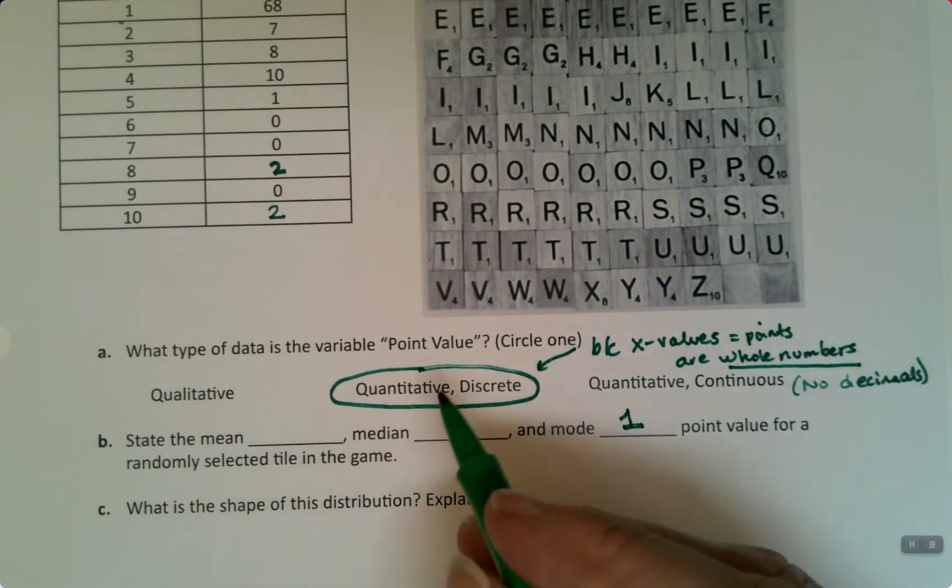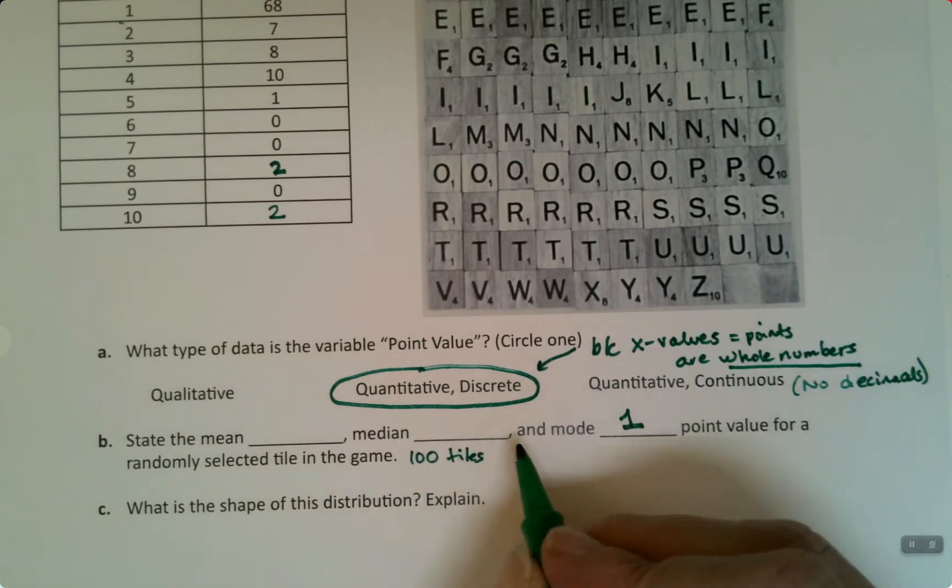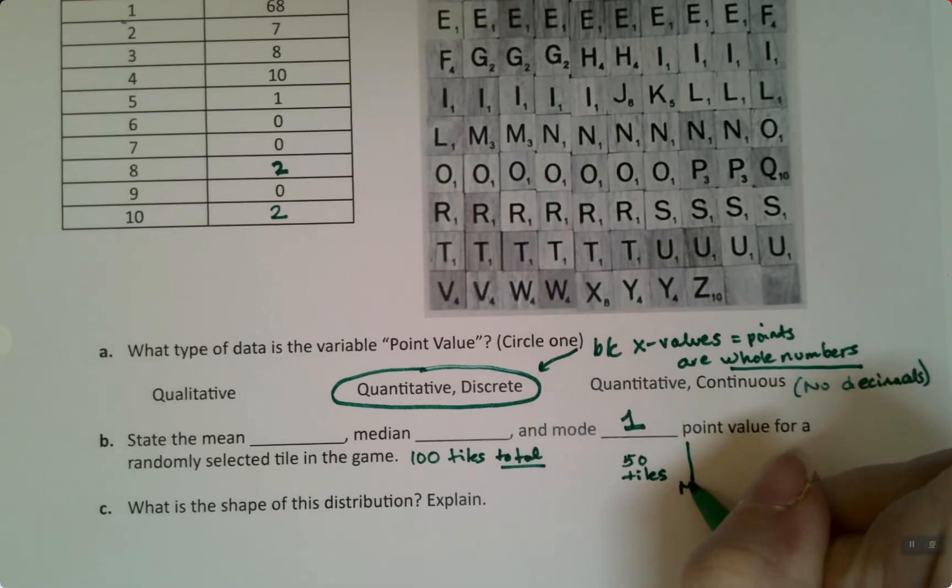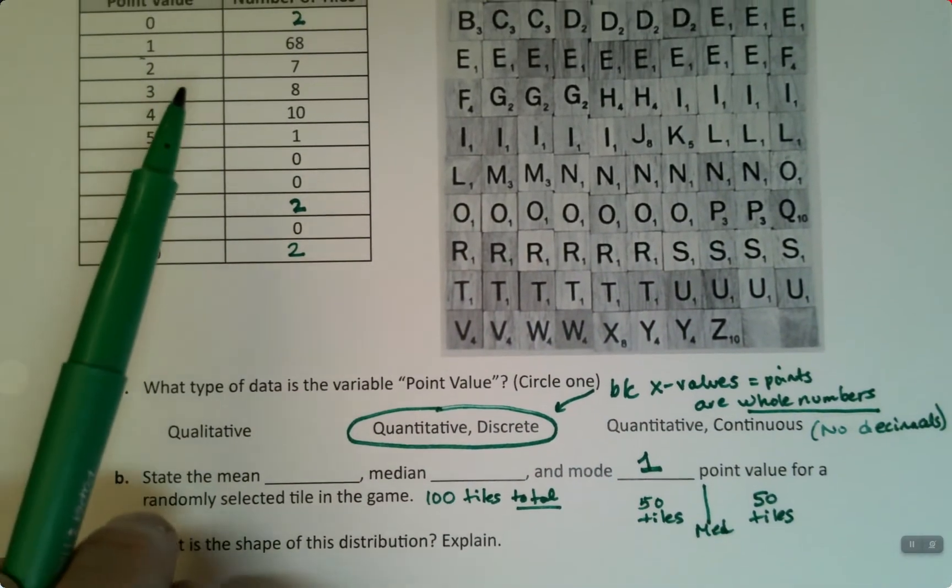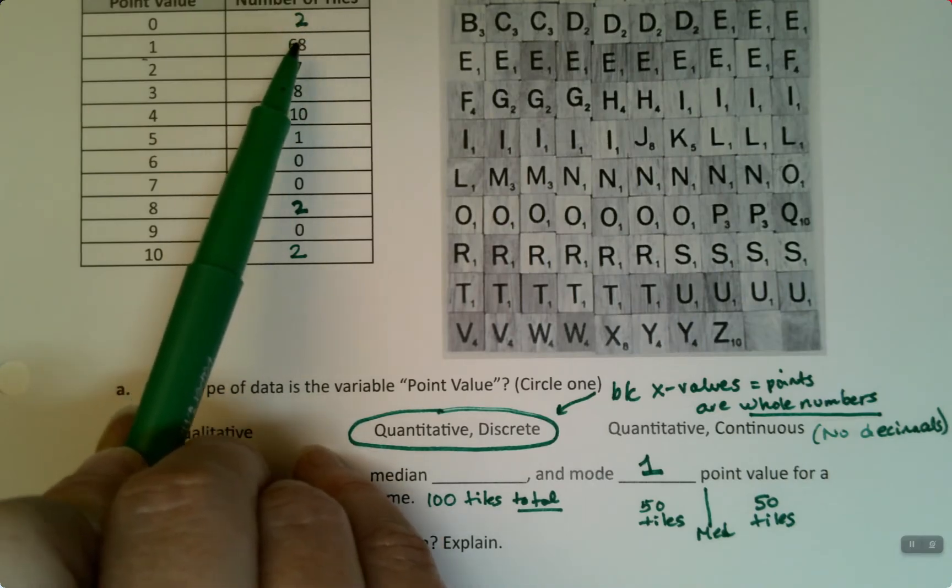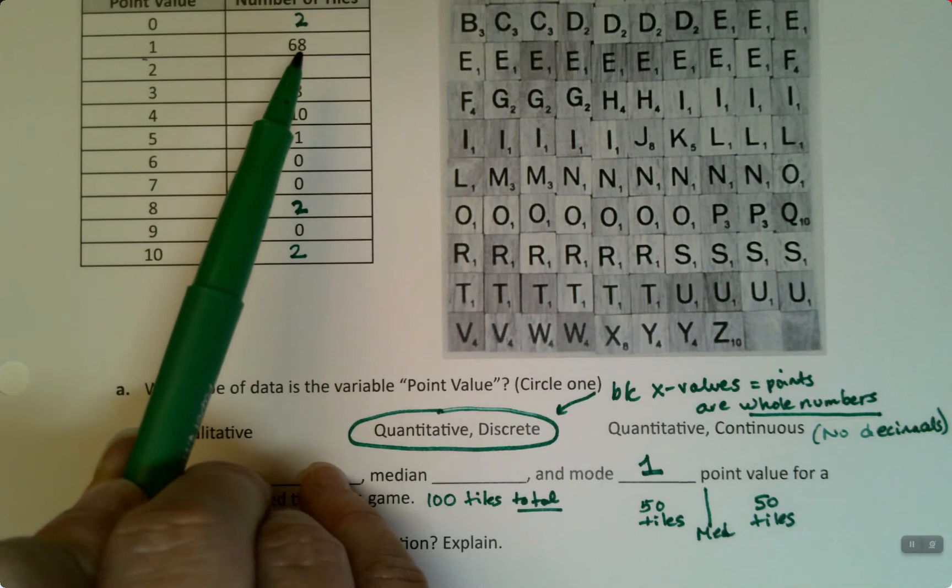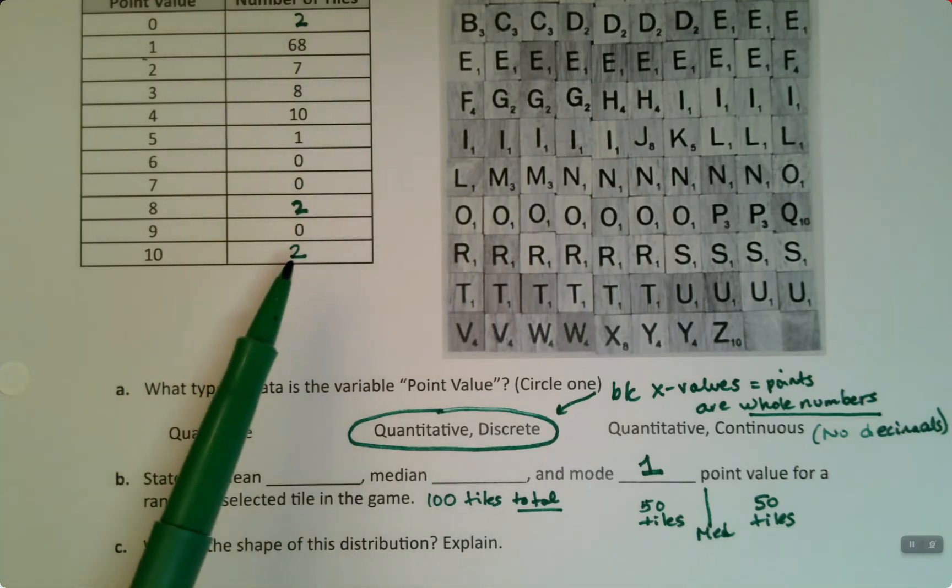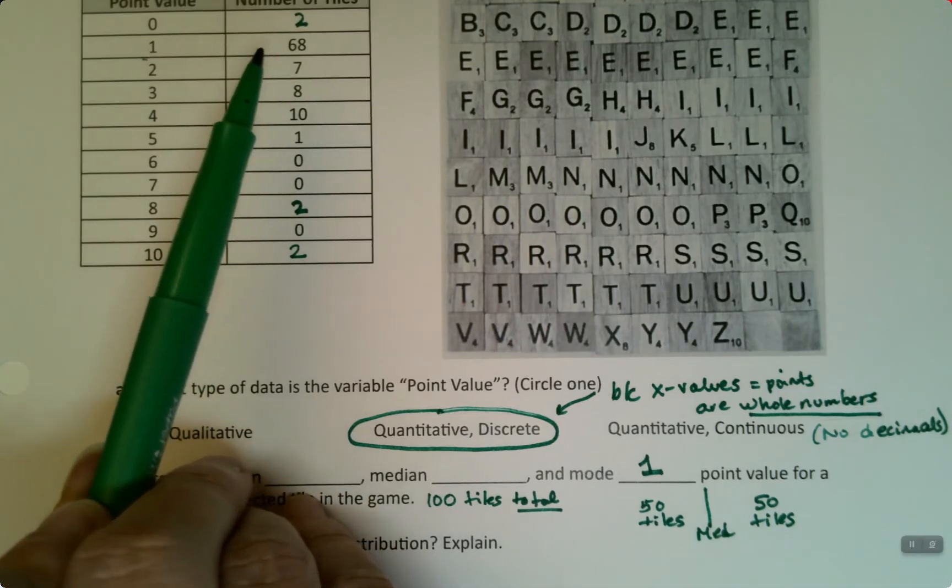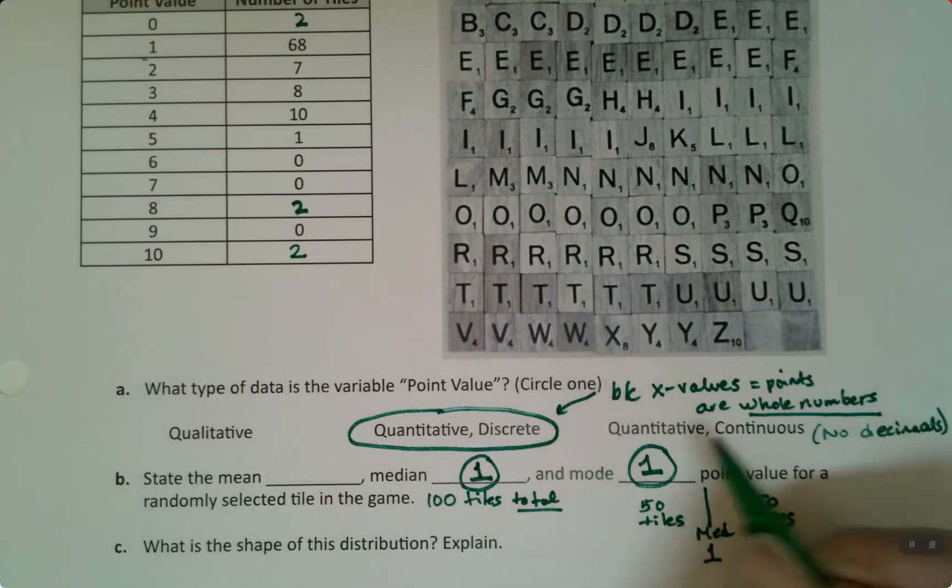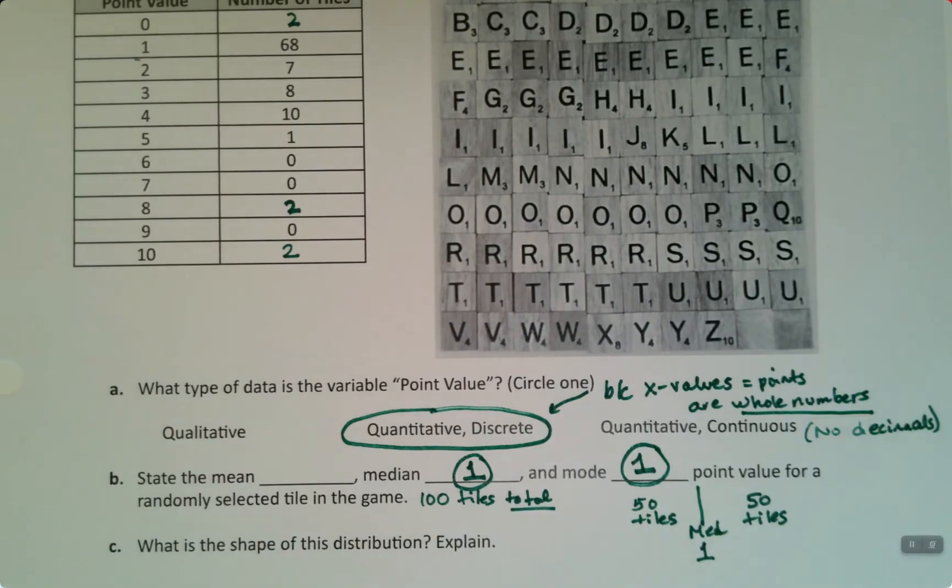Now if we think about the median, there's 100 tiles total. That means the median is the value that has 50 tiles below it, and then you have the median right here, and then you have 50 tiles above it. It's kind of obvious where it has to be. If I start at 2 and go all the way up to 50, I'm in the middle of this group. The 50th one's in here somewhere, and then there's 50 up here. I'd cut this particular group up into about 48 and 20 more. So the median has to be 1 also. You can visualize that.